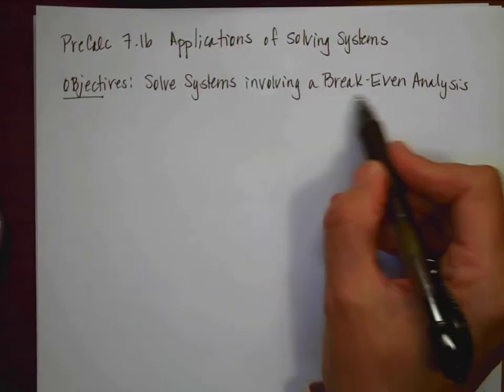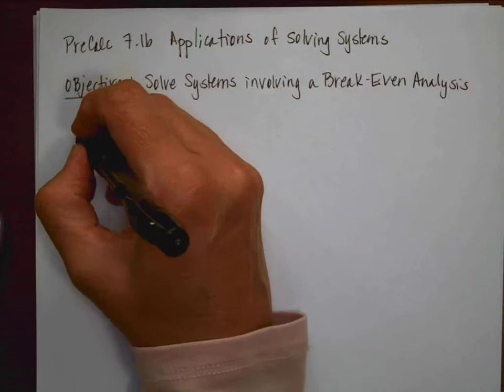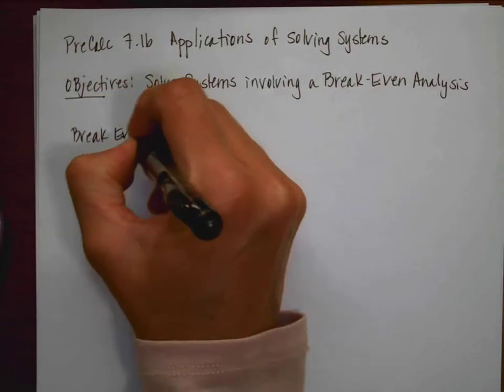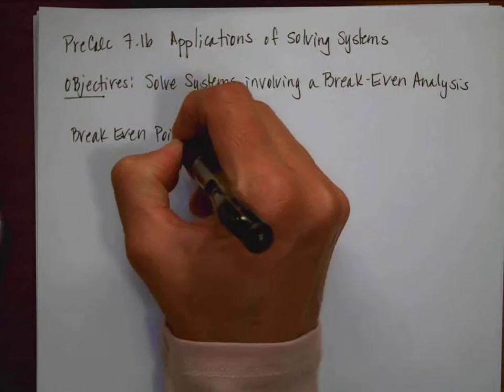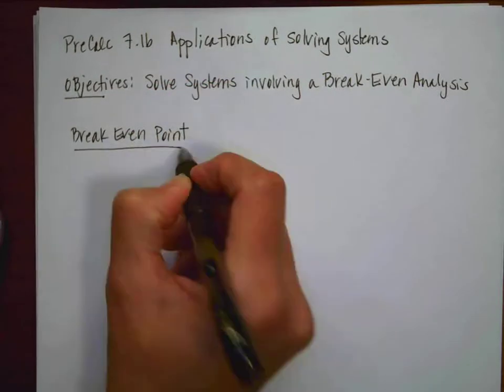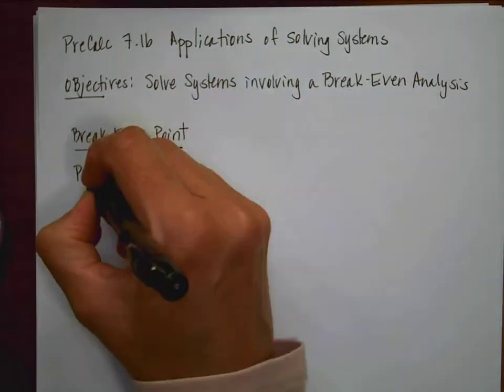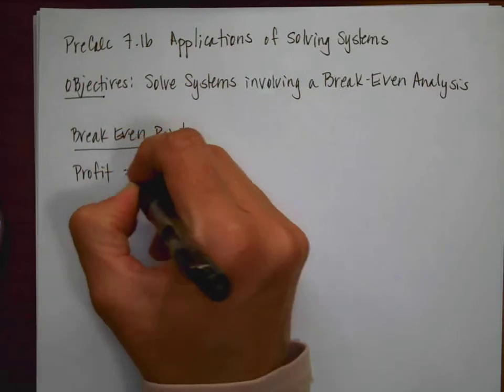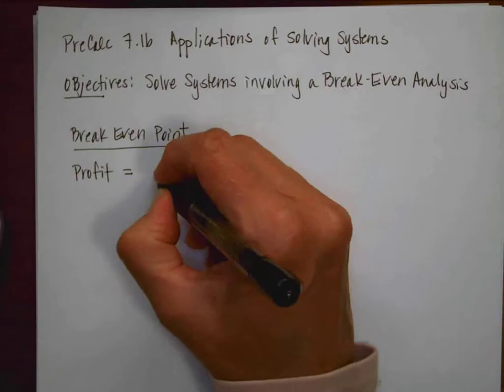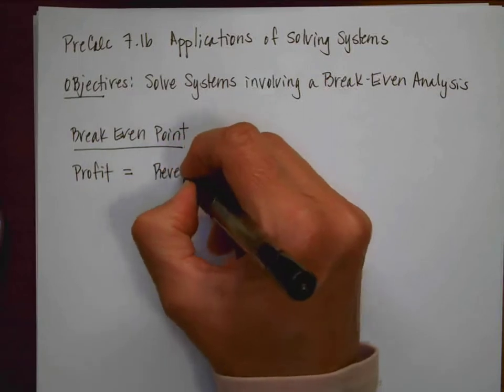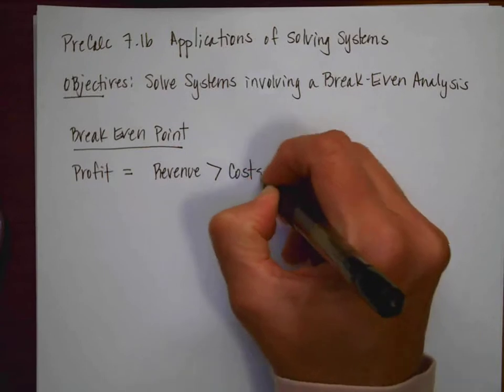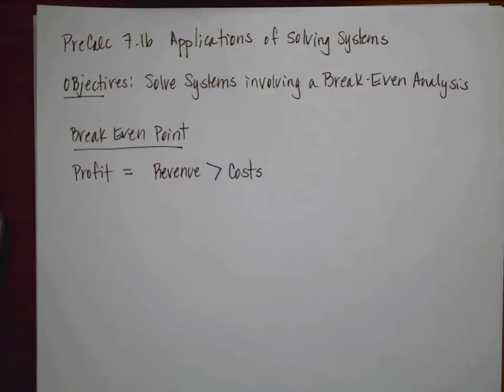So before we talk about this break-even process analysis, let's talk about a break-even point. So here's the way this process works. If I'm going to have a profit from making something or selling something, that is when my revenue is going to be greater than however much it costs me to produce that item.